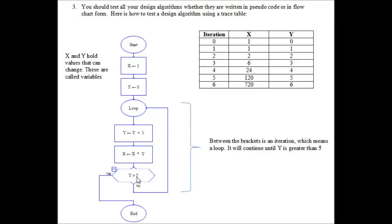And then we drop down to X equals X times Y, so it's 6 times 120, which is 720. We go down then and test the value of Y on iteration 6 and find out that it's 6, so therefore Y is now greater than 5.